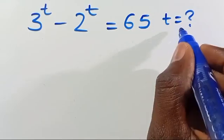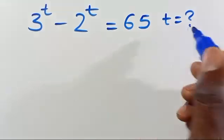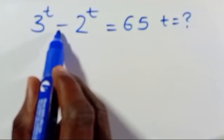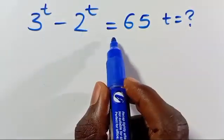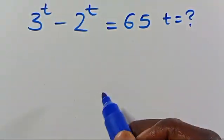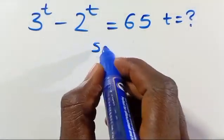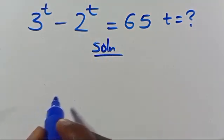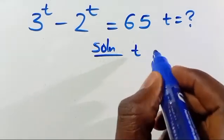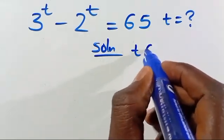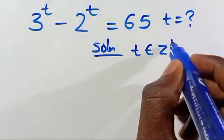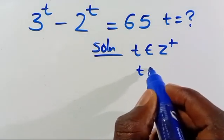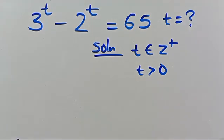Hi, what is the value of t given that you have 3 to the power of t minus 2 to the power of t equals 65? So let's have a solution from here. Recall that t is a member of the positive integers and t is also greater than 0.